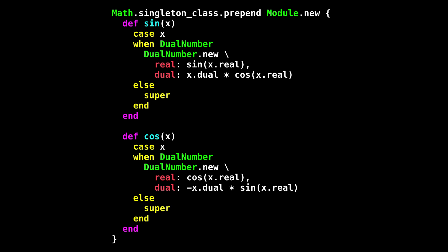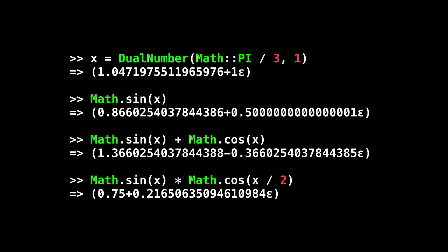Those formulas are easy to monkey patch into the math module. Here I'm overriding sine and cos in the math module to use the appropriate formulas if they're called with a dual number, otherwise they'd call super to use the original implementation. And now we can take the sine and cosine of dual numbers and combine them into larger expressions.